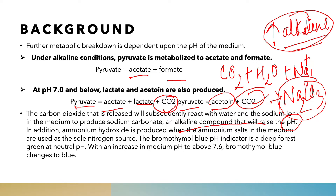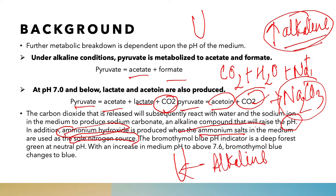There is also another compound in the medium — ammonium salt. These ammonium salts are utilized by the bacteria as the source of nitrogen. While utilizing the ammonium salt, the bacteria also produce ammonium hydroxide. Ammonium hydroxide is alkaline in nature, so this also contributes to making the pH of the medium alkaline.